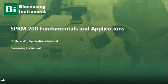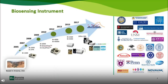Thanks for the introduction. My name is Shidi Wu from Biosensing Instrument. Today I'm going to talk about the basic principles and applications of surface plasmon resonance microscopy. Biosensing Instrument is located in Arizona, USA and we started in 2005. Since then, we have developed a series of platforms for specialty SPR measurement. Particularly in 2017, we developed a new platform called SPRM, which is very well recognized by the industry, received quite a few awards, and has received a lot of interest from researchers all over the world.